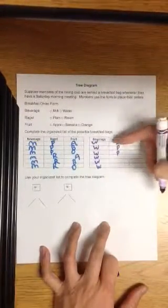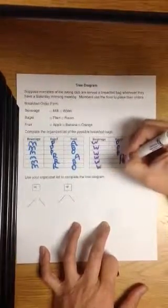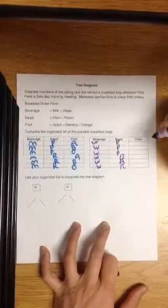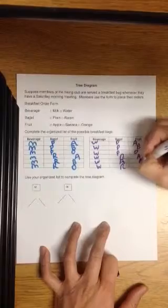So half the choices for water are plain. The other half are raisin. What are the three possible fruits? Apple, banana, orange. Apple, banana, orange.